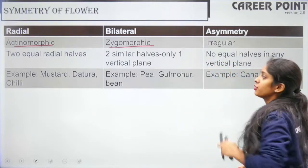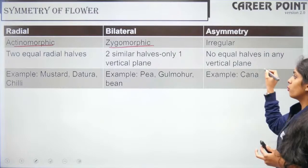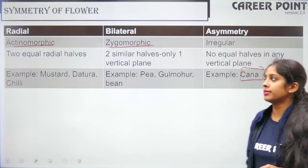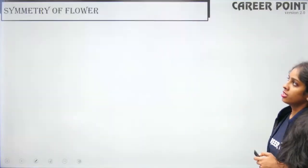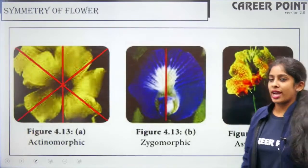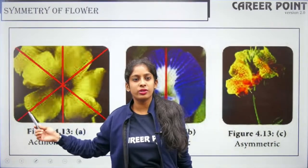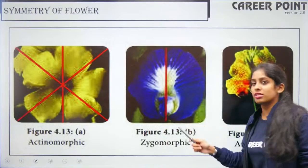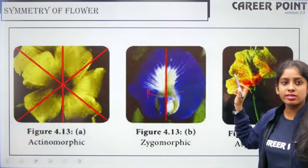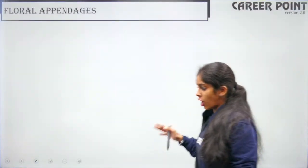Asymmetry has no plane of division; example is Canna. So actinomorphic has more than one plane, zygomorphic has only one plane and asymmetry has none.